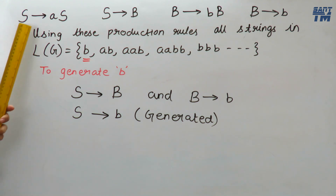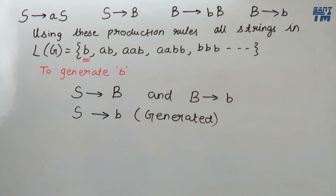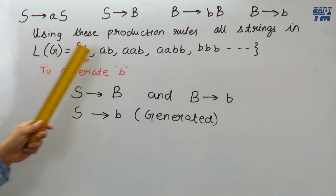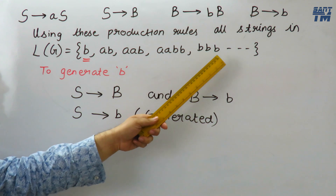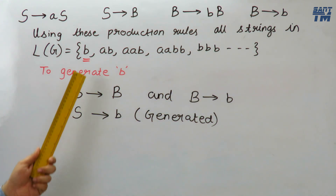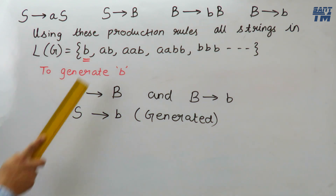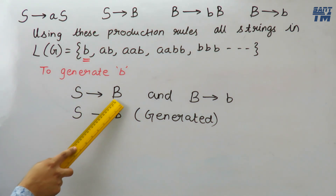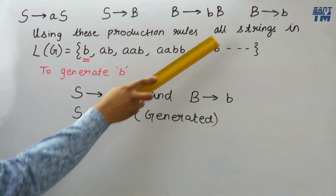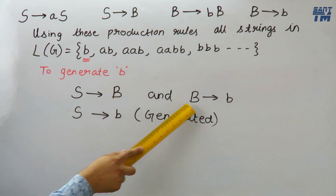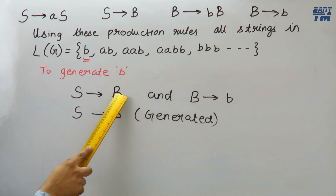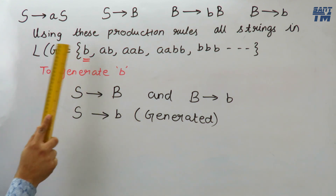These four production rules are what we decided. Now using these production rules, all strings in this grammar — b, ab, aab, aabb, bbb, and so on — can be generated. Let's say we want to generate b: using the start symbol, S derives B, and this B can be replaced using the production B derives b. So S derives b — the first string is generated.